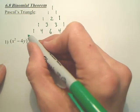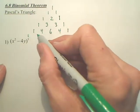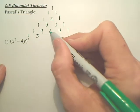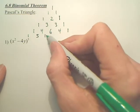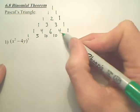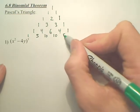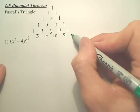The next one would be 1. 1 plus 4 is 5. 4 plus 6 is 10. 6 plus 4 is 10. 4 plus 1 is 5. Then the 1 on the other end.